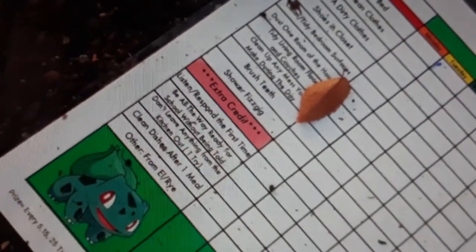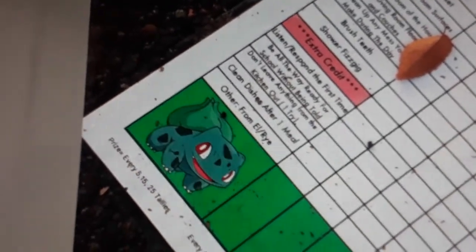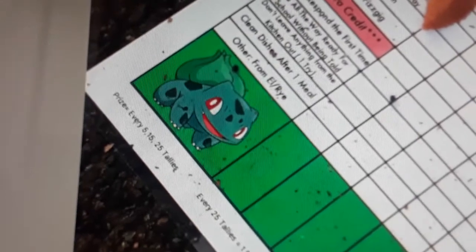A little kids laminated chore chart. Make bed, clean clothes, shoes and closet, tidy bedroom surfaces, brush teeth, shower, blah blah blah, extra credit. And then there's a little Bulbasaur on there.